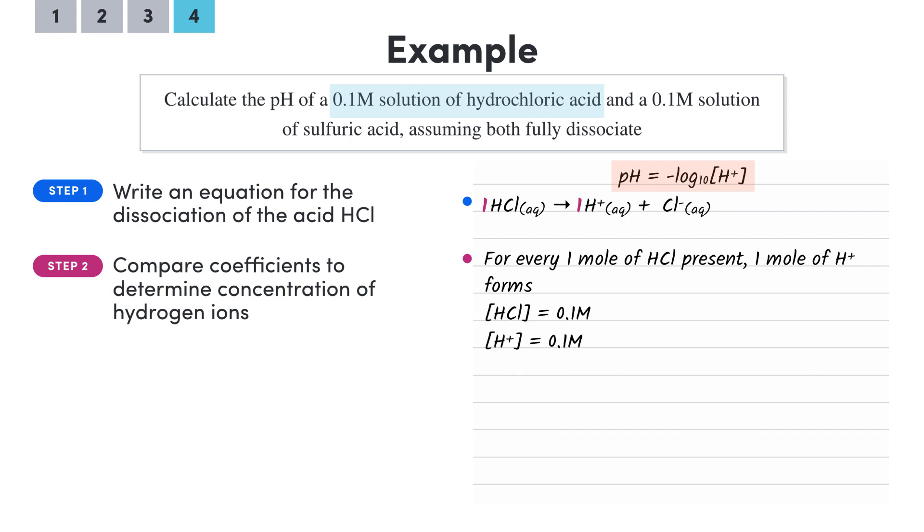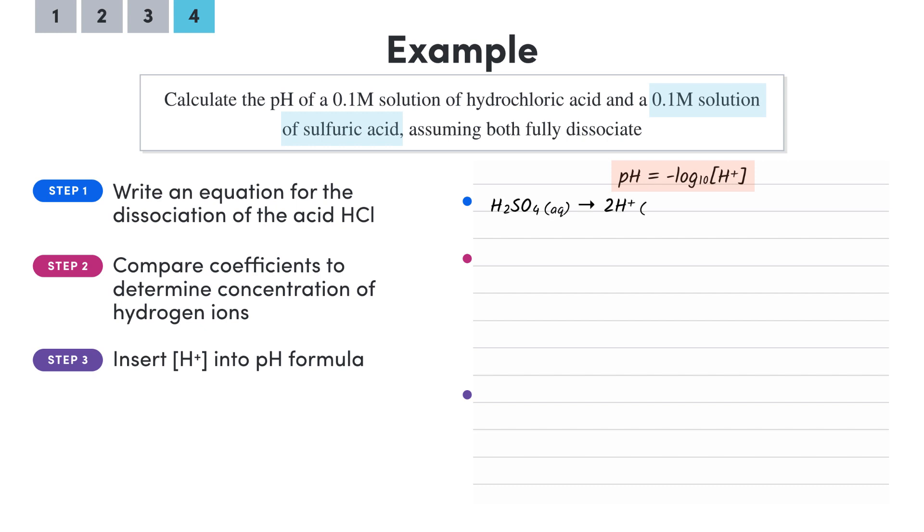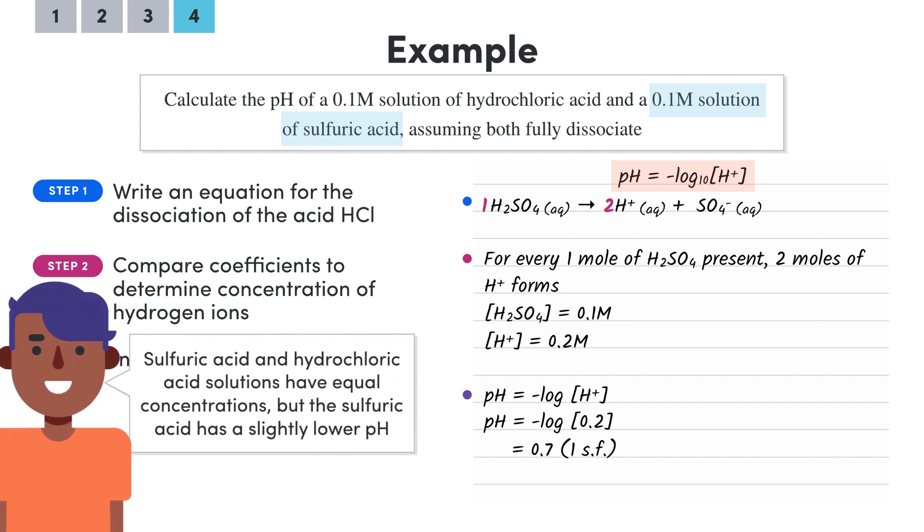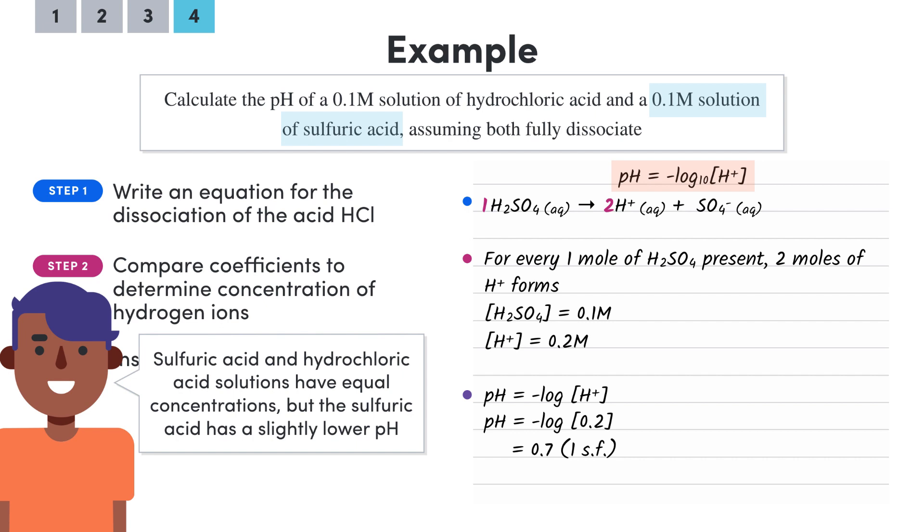Plugging this into our pH formula, we find a pH of 1. Now repeating for sulfuric acid, we see that the key difference is that we get 2 hydrogen ions in our dissociation equation instead of 1, meaning the concentration of hydrogen ions is 0.2 molar. Therefore, the pH is 0.7 to one significant figure. So we can see that with the sulfuric acid and a hydrochloric acid solution of equal concentration, the sulfuric acid has a slightly lower pH, and we can put this down to the fact that while both acids completely dissociate, each sulfuric acid has 2 acidic hydrogens.